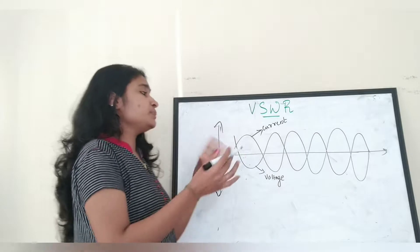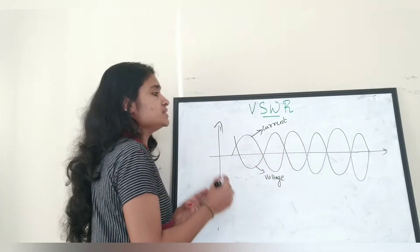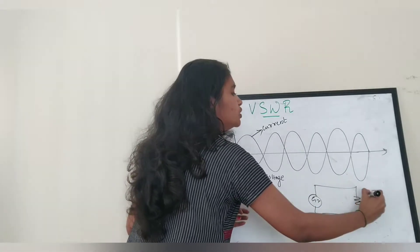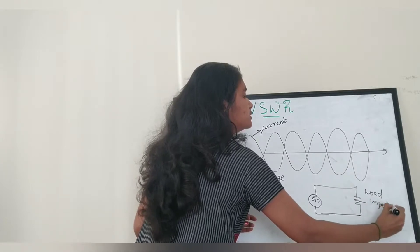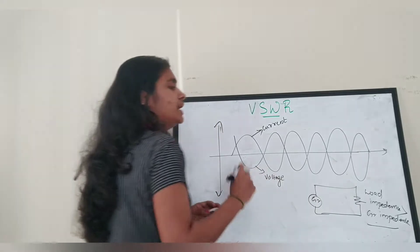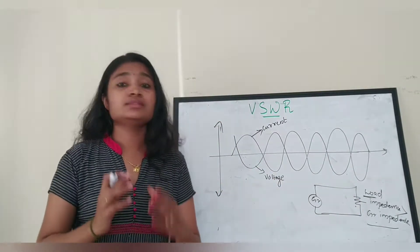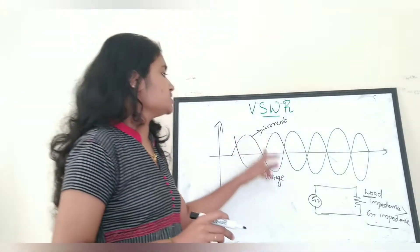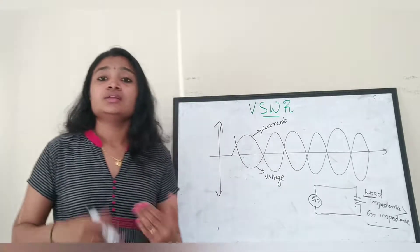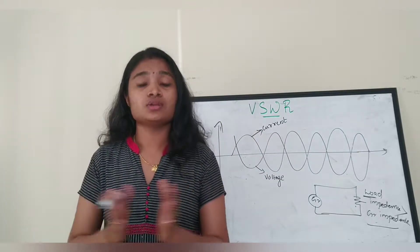There are two types of standing waves: current standing waves and voltage standing waves. This particular waveform shows the case when there is a generator and a load where the load impedance is greater than the generator impedance. The upper waveform is the current standing wave and the lower one is the voltage standing wave. In general, both are referred to simply as standing waves.